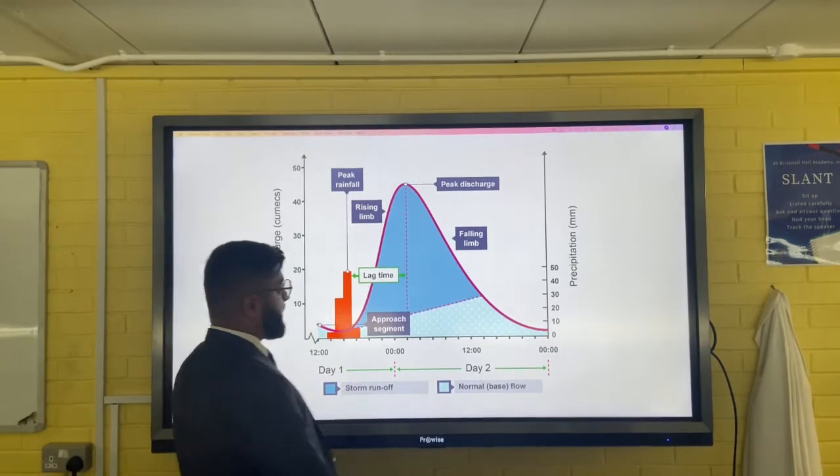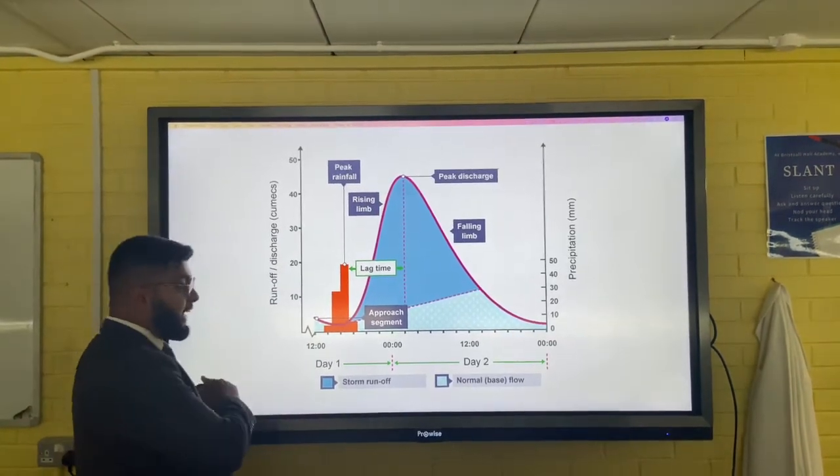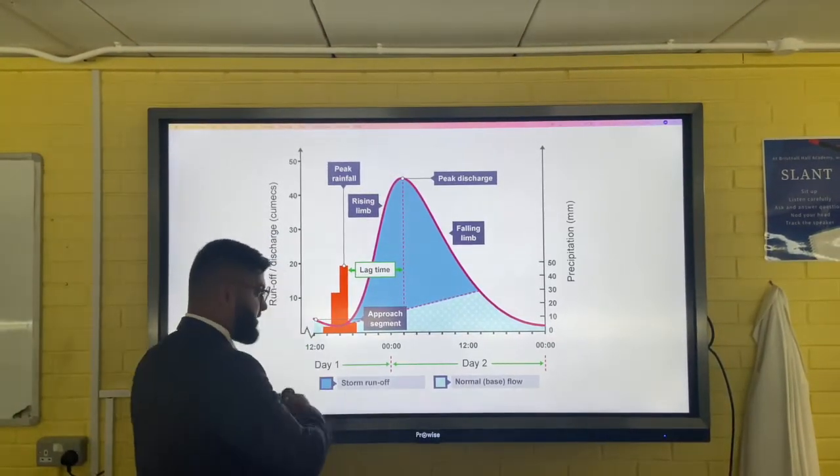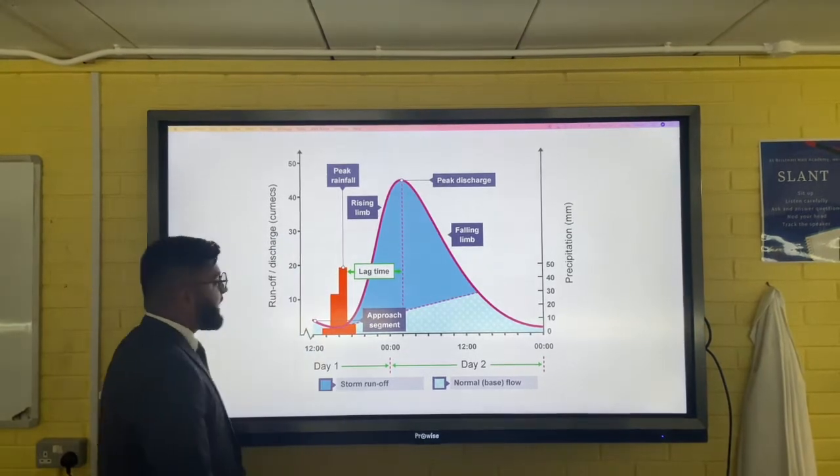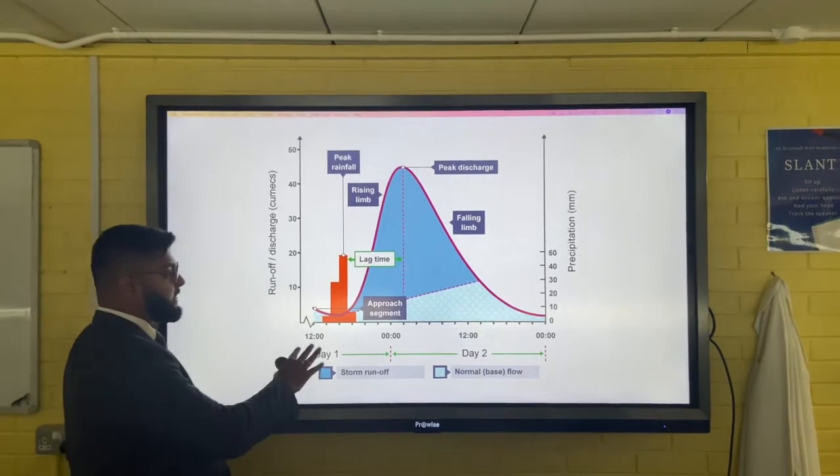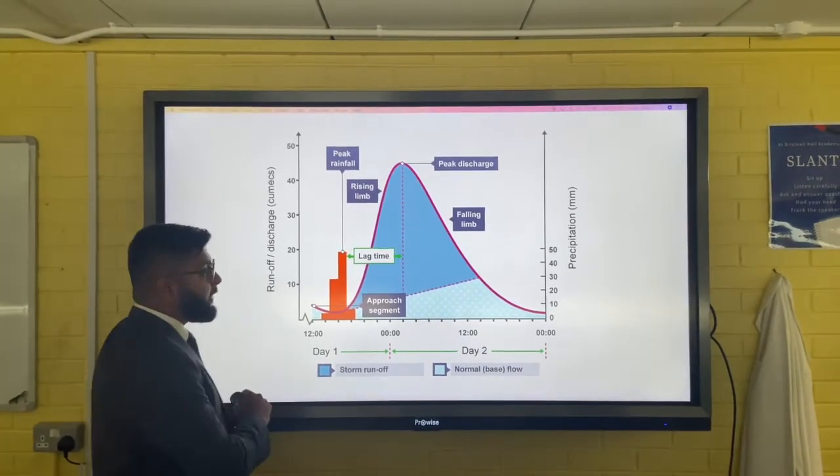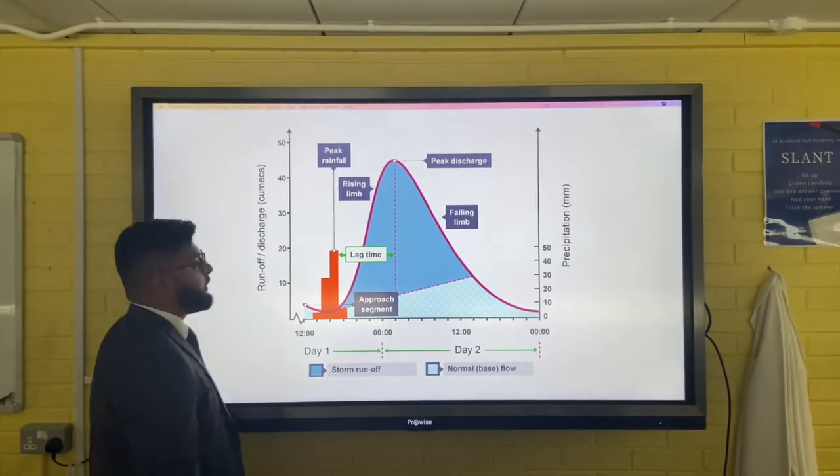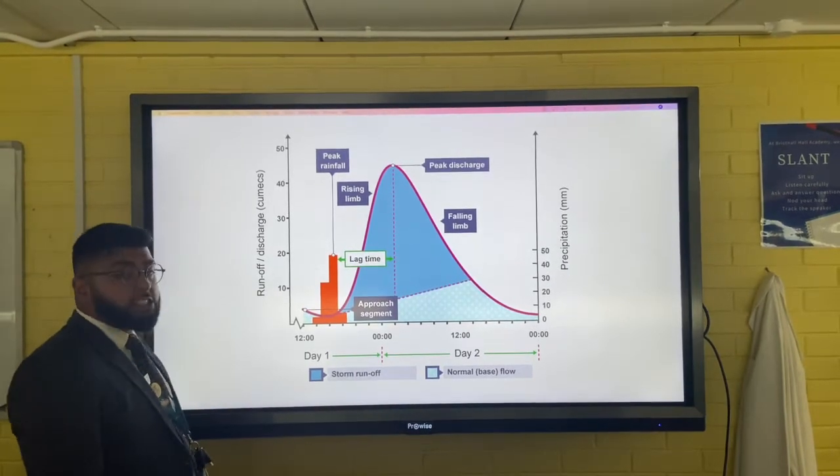This is a storm hydrograph for a period of two days. As you can see on the x-axis, we have time from day one to day two in hours. On the y-axis, a bit like a climate graph, we have two y-axes - one for this bar chart which shows rainfall, and one for this line graph that shows river discharge, which is measured in cumecs or meters cubed.